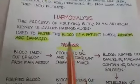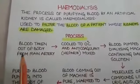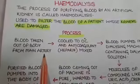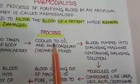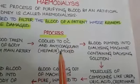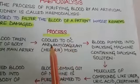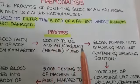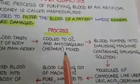In the process of hemodialysis, the blood is taken out of the body from the main artery. It is cooled down to 0 degrees Celsius and mixed with an anticoagulant that prevents the blood from coagulating. This anticoagulant is called heparin.